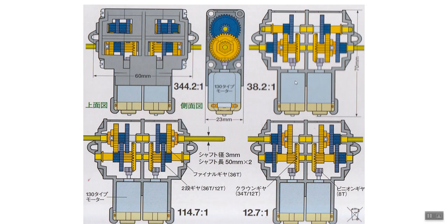There are four choices shown on the back of the box. There's one way to assemble it to get a 344.2 to 1 — a speed reduction of 344.2 times — then 38.2 to 1, 114.7 to 1, and a 12.7 to 1. The 12.7 to 1 would have the fastest rotation output and therefore the lowest torque output. The 344.2 to 1 would have the slowest output speed but the highest torque. Which one you'd pick depends on what you want to do. Depending upon the gear ratio that you pick, it actually changes where the output shaft is located. You could also have each side with a different gear ratio.